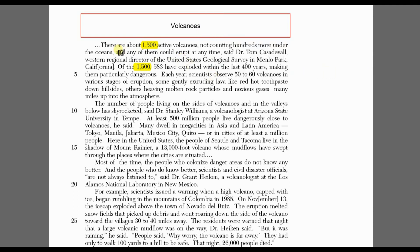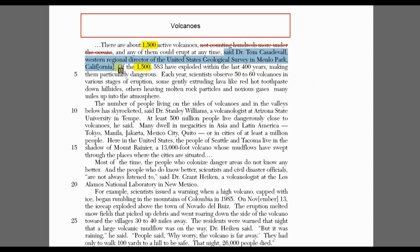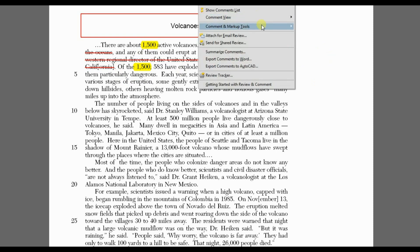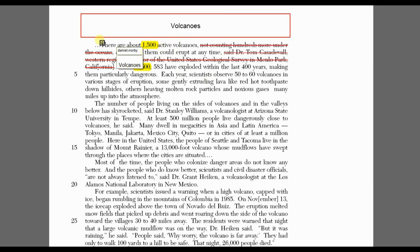There are about 1,500 active volcanoes, and any of them could erupt at any time. The first part I crossed out has the phrase 'not counting,' so I know that information does not apply to the 1,500 — it's irrelevant. The second part I crossed out is information about Dr. Tom Casadevall. Since the question is not about a person, I know that this too is probably irrelevant. Notice how the information is broken up by irrelevant content — the test writer did this on purpose to trick you.